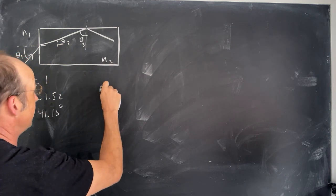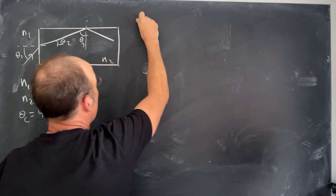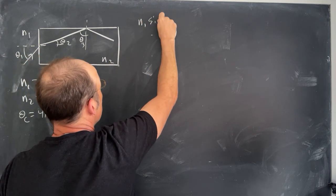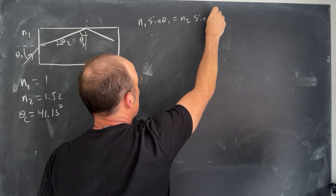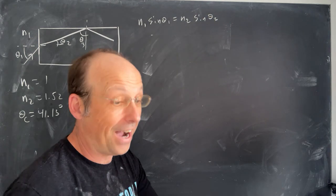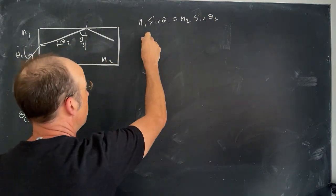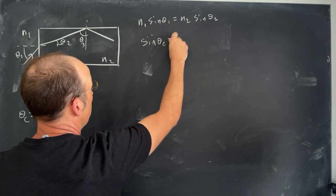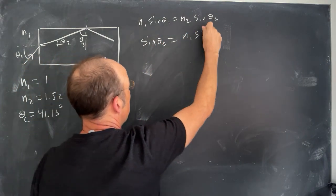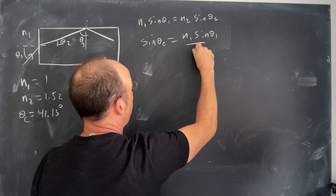So I can say Snell's Law, let's put it up here, N1 sine theta 1 is N2 sine theta 2. I want to find theta 2. So theta 2 sine, I can write it like this, sine of theta 2 is N1 sine theta 1 over N2.